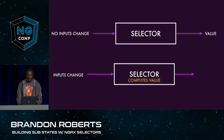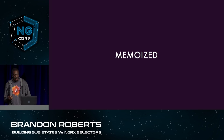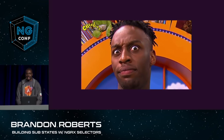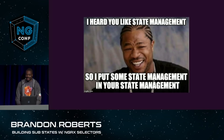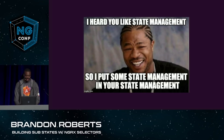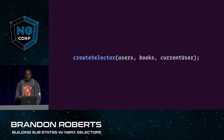There's another added benefit: selectors are memoized. Memoized selectors maintain a state of the last value, so even if your inputs change and produce the same result, the current value is returned. Going back to selecting multiple sets of data, such as users, books, and the current user — these values could change, but since we're working with shared data, the selector could produce the same result when compared. It will return the same reference and no changes would need to be triggered.